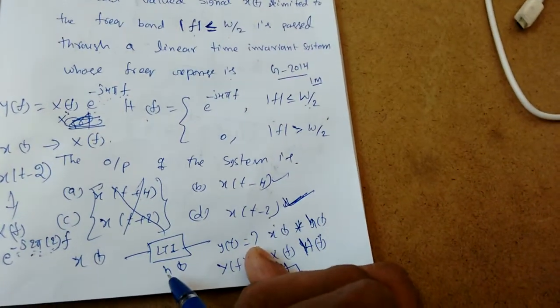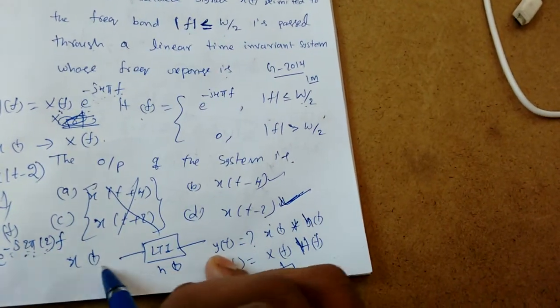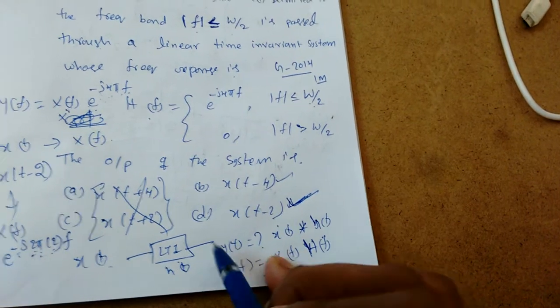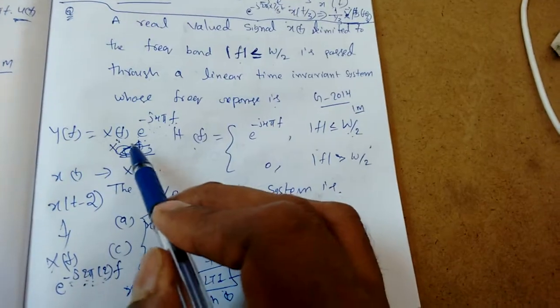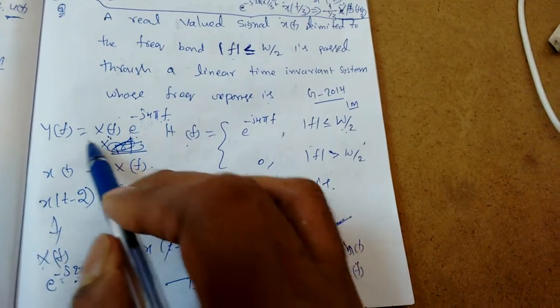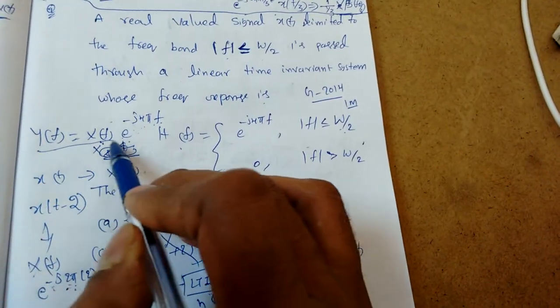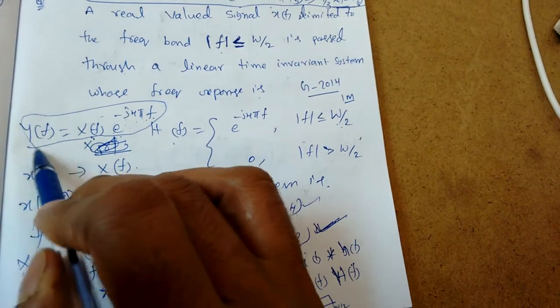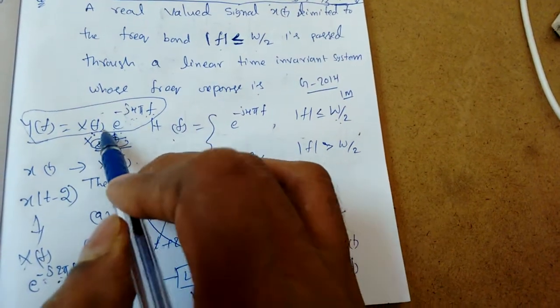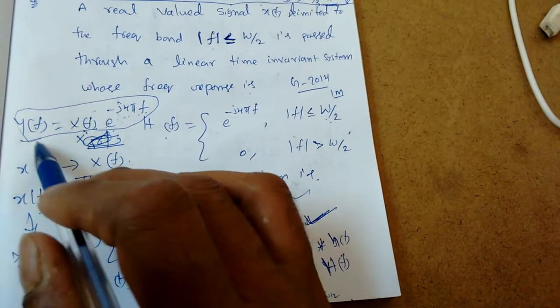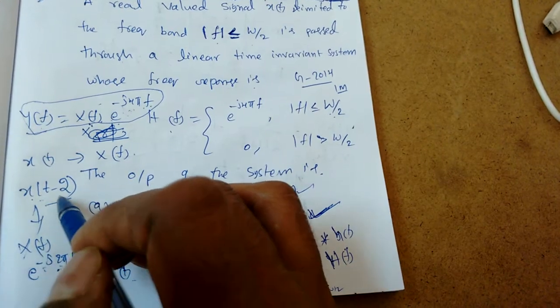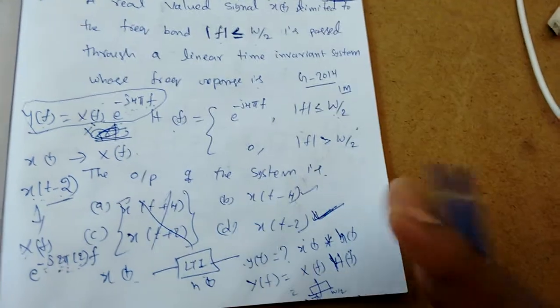Whenever the system function is given, we multiply the signals in the frequency domain. We see Y(f) = X(f) · e^(−j4πf), and to get the corresponding time domain signal y(t) = x(t − 2).